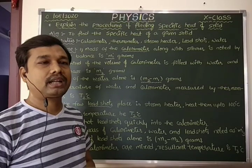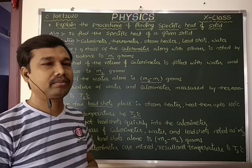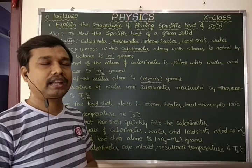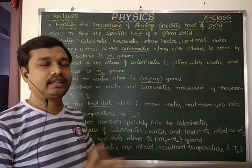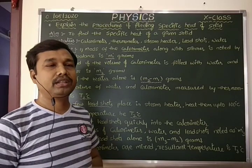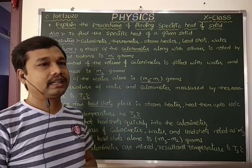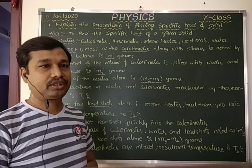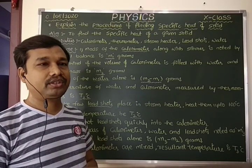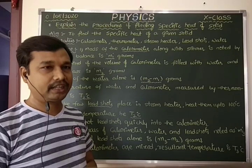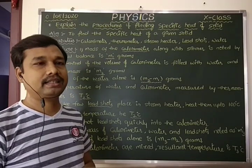After adding the hot lead shots into the calorimeter, we need to stir the mixture. The resultant temperature of the mixture is then noted as T3 degrees Celsius.